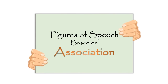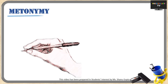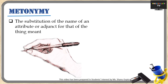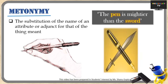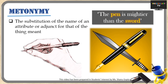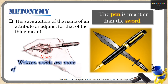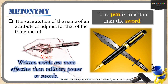Next we move on to figures of speech based on association. In this type, we don't compare two objects but rather talk about one object in terms of another that is known to be associated with the first. The most common figure of this type is metonymy — the substitution of the name of an attribute or adjunct for that of the thing meant. The best example is 'The pen is mightier than the sword.' The pen symbolizes written words, while the sword symbolizes military power and bloodshed, so the implied meaning is that written words are more effective than military power.